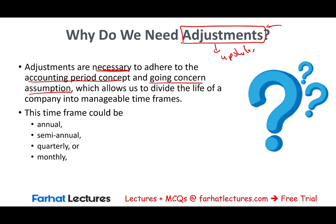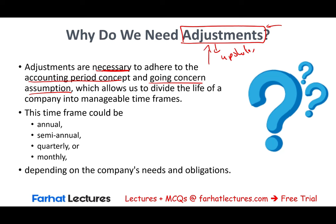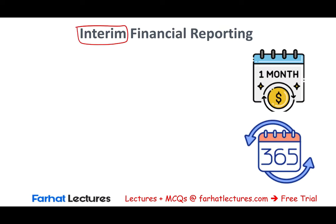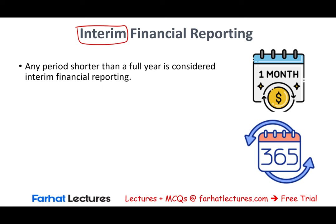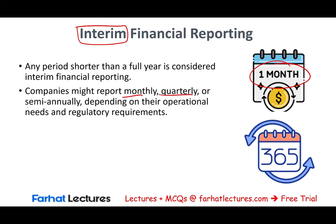The time frame for preparing adjustments could be annual, semi-annual, quarterly, monthly, or even weekly — depending on how often the company needs financial statements and its obligations. Whenever we prepare financial statements, certain accounts need to be adjusted or updated so all figures are current. Now, interim financial reporting refers to any period that is less than a full year — monthly, quarterly, or semi-annual reporting all qualify as interim.